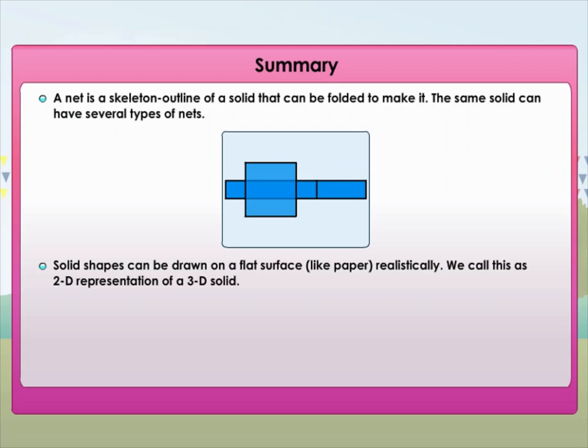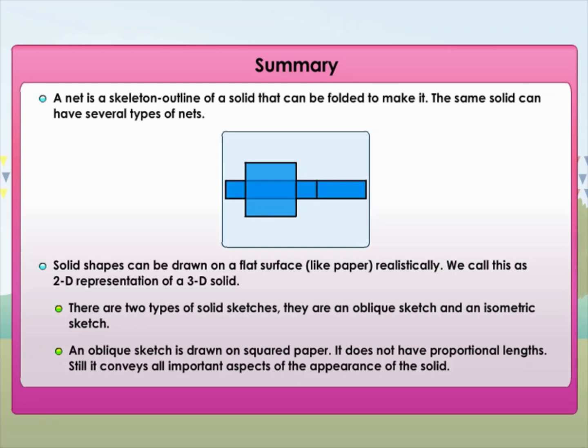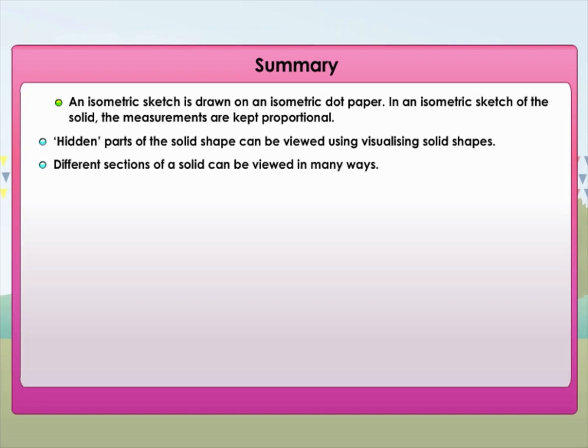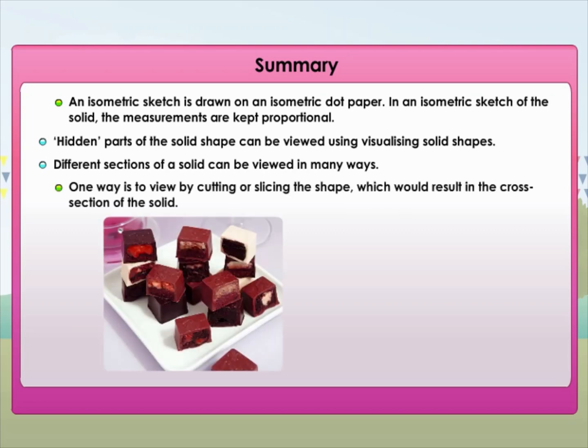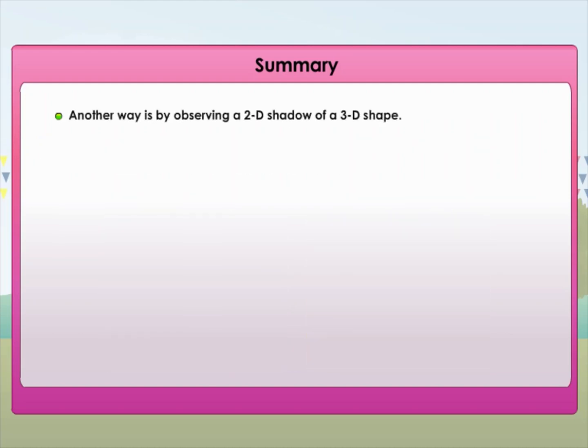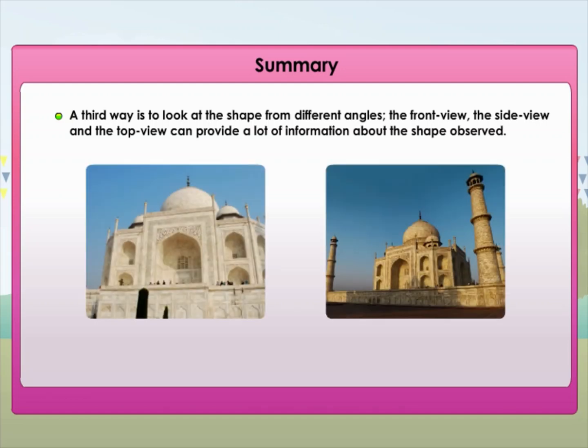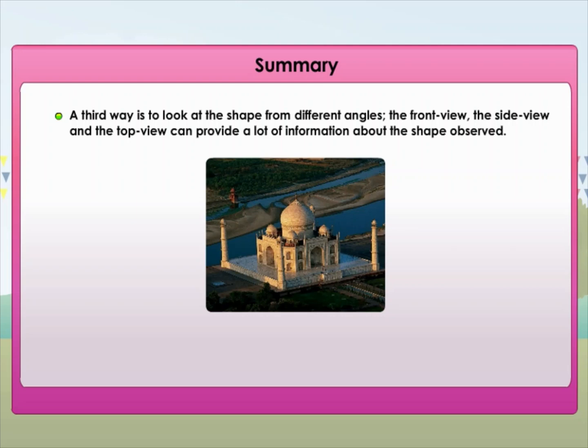Solid shapes can be drawn on a flat surface like paper realistically. We call this as 2D representation of a 3D solid. There are two types of solid sketches: oblique sketch and isometric sketch. An oblique sketch is drawn on squared paper and does not have proportional lengths. Still, it conveys all important aspects of the appearance of the solid. An isometric sketch is drawn on an isometric dot paper. In an isometric sketch of the solid, the measurements are kept proportional. Hidden parts of the solid shape can be viewed using visualizing solid shapes. Different sections of a solid can be viewed in many ways. One way is to view by cutting or slicing the shape, which would result in the cross-section of the solid. Another way is by observing a 2D shadow of a 3D shape. A third way is to look at the shape from different angles: the front view, the side view, and the top view can provide a lot of information about the shape observed.